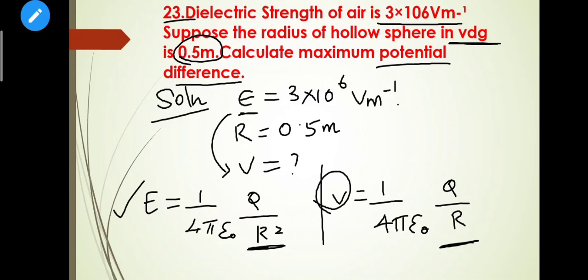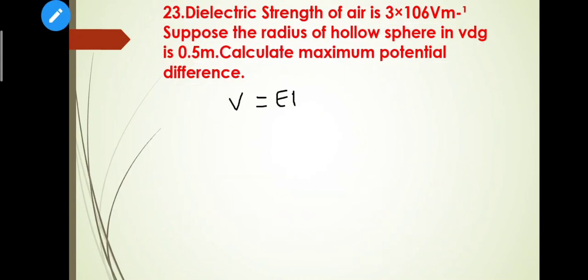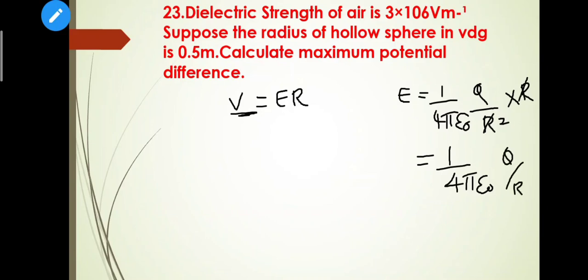The formula for electric field E = 1/(4πε₀) × q/r². To find potential V, we need V = Er. This gives V = E × r, where the terms cancel appropriately. So V = Er.